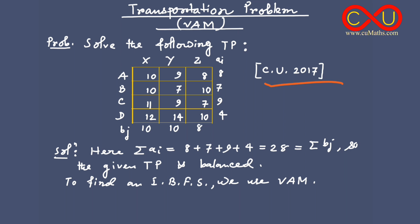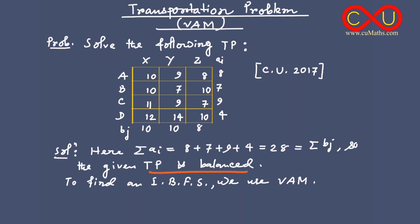This is a problem of Calcutta University 2017. First we write summation AI — summation of elements 8, 7, 9, 4 — the sum of all elements is 28. This is also equal to the sum of elements of BJ, which is also 28, so the transportation problem is balanced. To find an initial basic feasible solution, we use VAM.